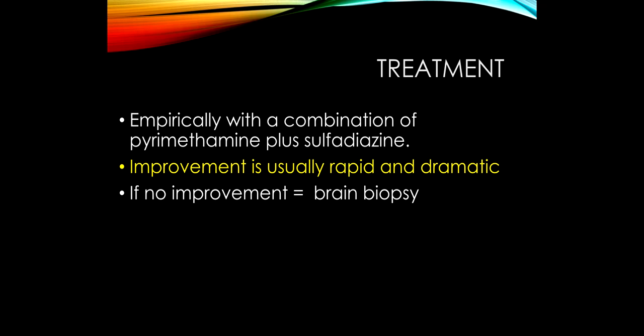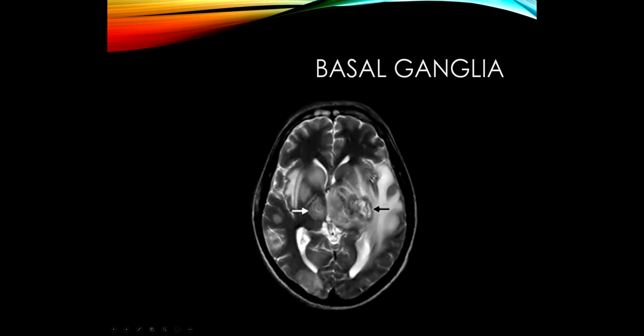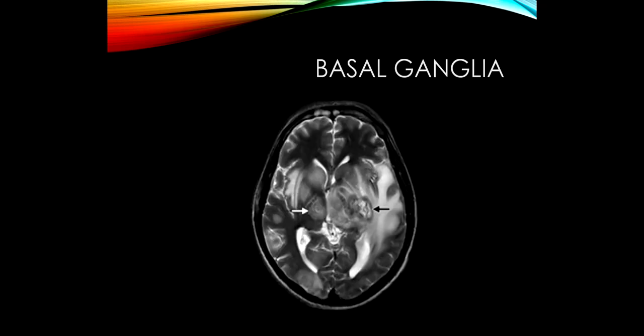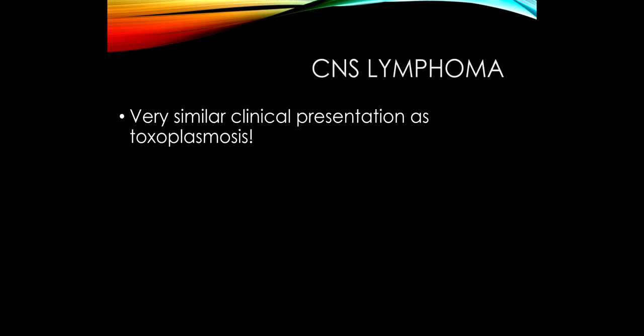What do we do if the patient isn't responding? If they're not improving, they have something else. In that case, we need to do a brain biopsy to get a tissue sample and find out what we're dealing with. We can follow the brain scan — in addition to seeing that the patient has clinically improved — and watch the swelling go down and the lesions shrink.